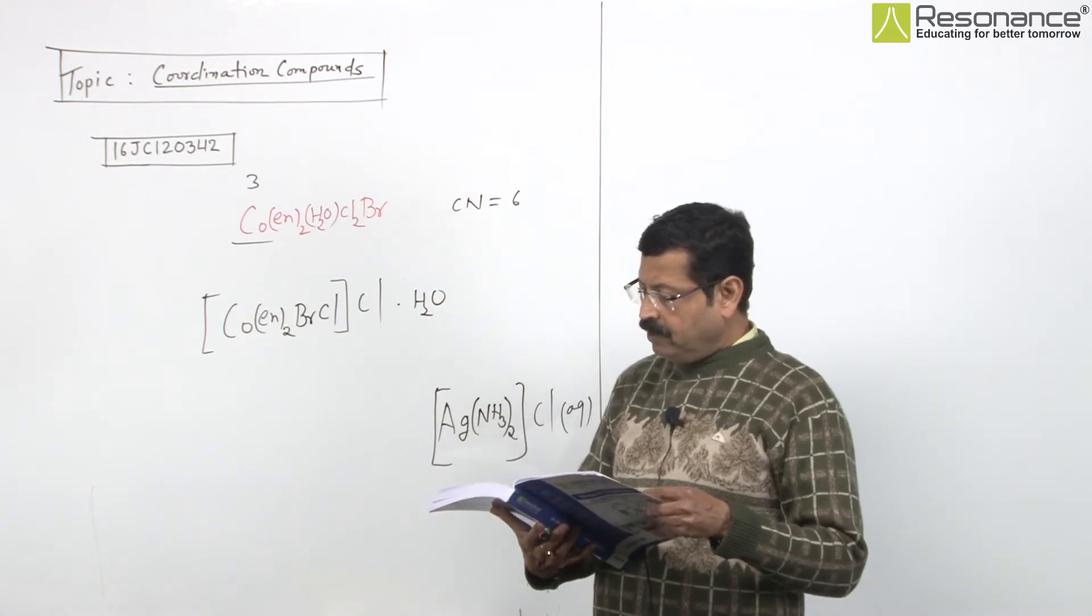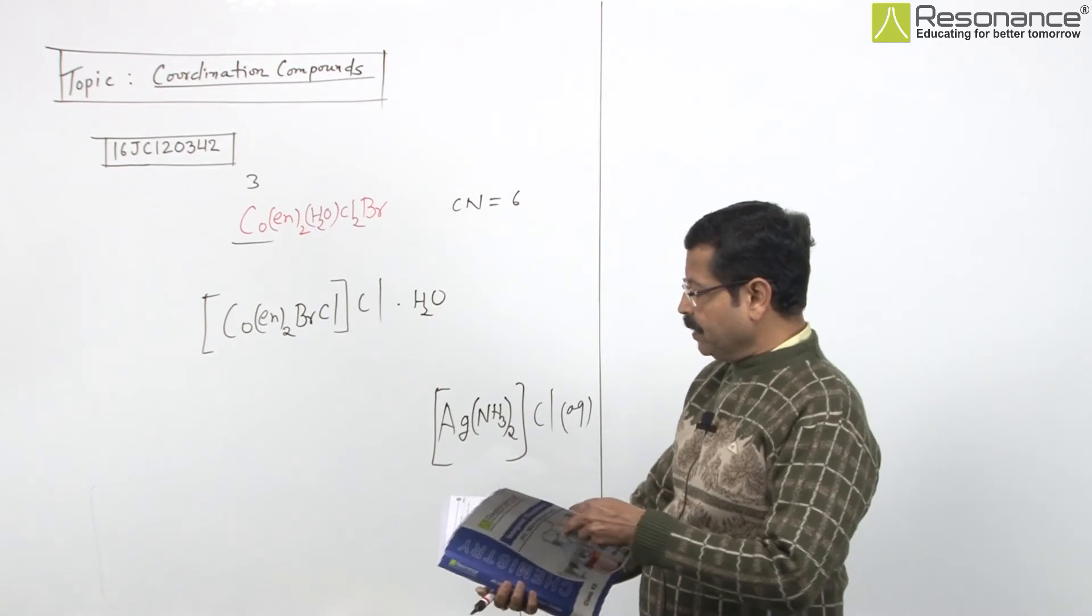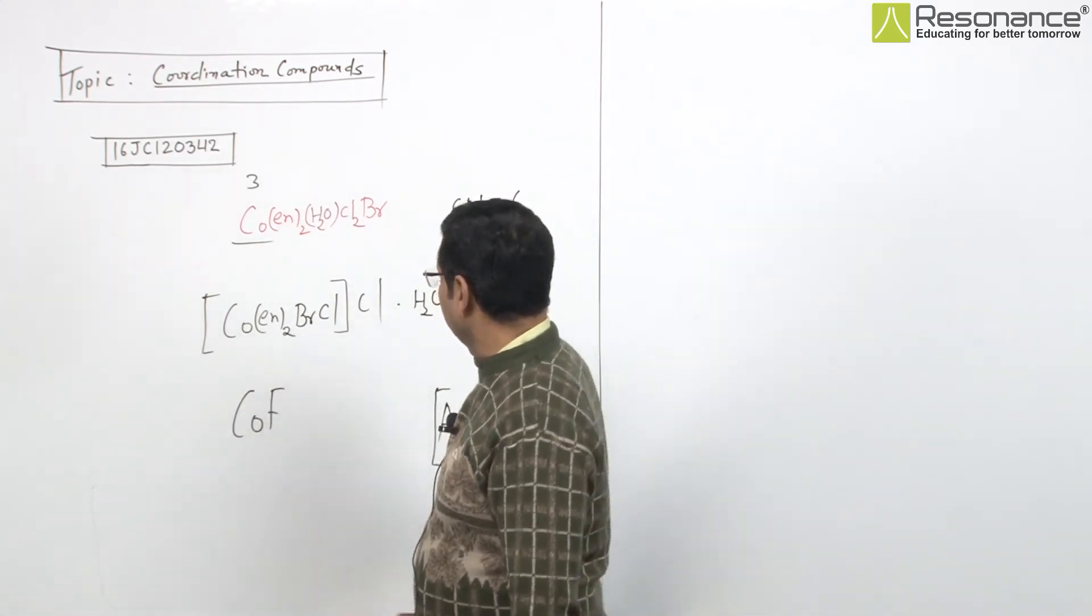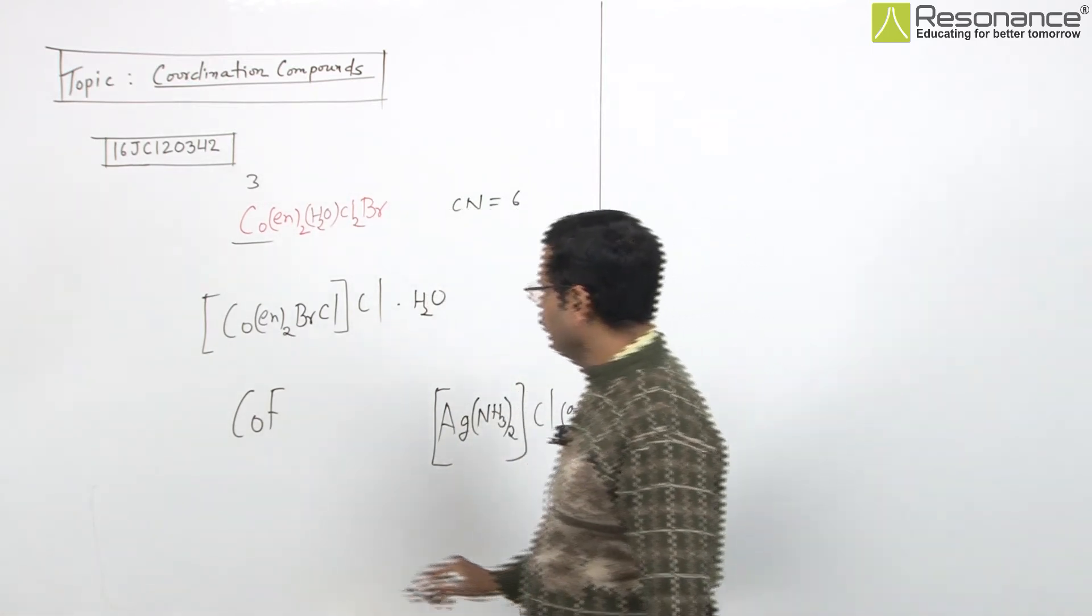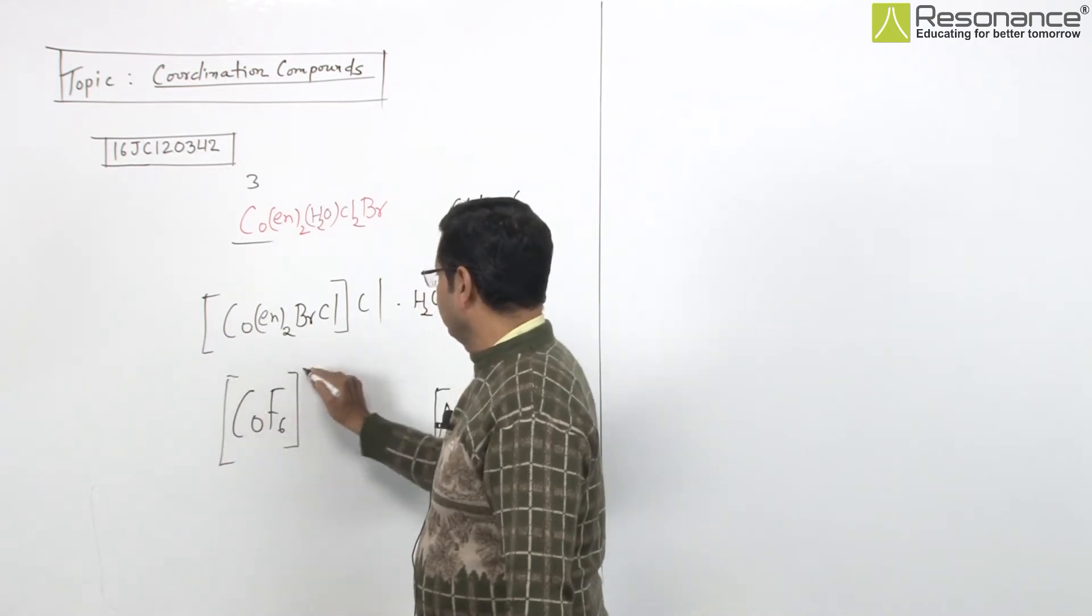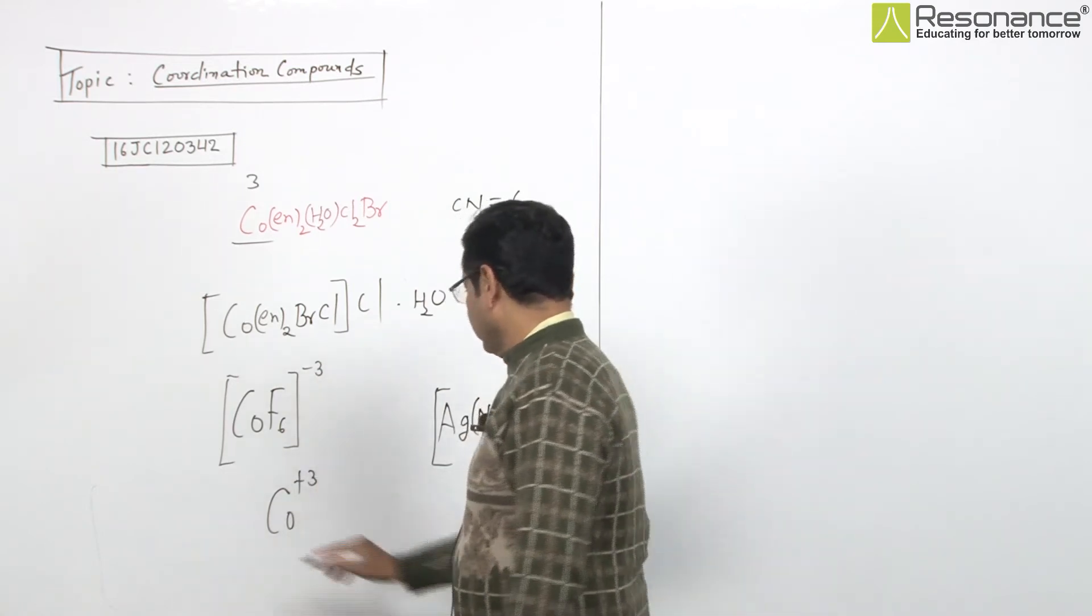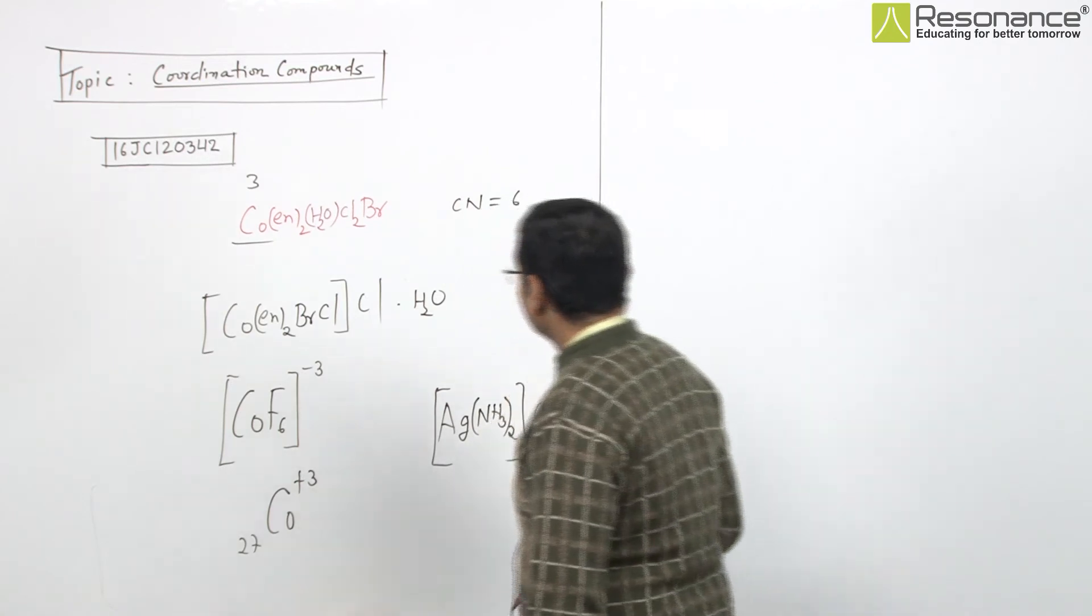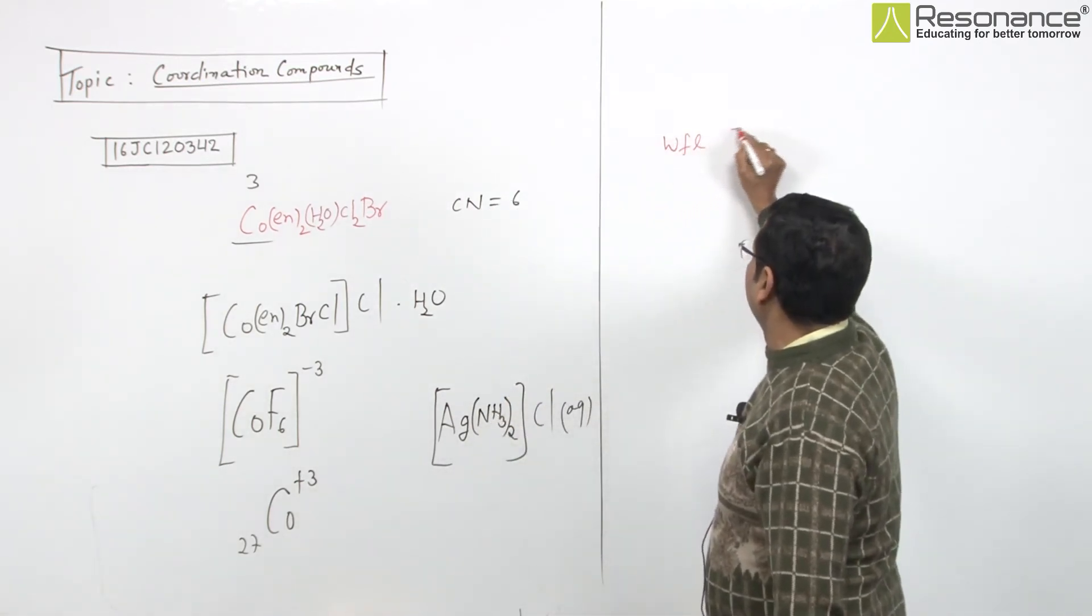If all the ligands in the coordination sphere of the above complex are replaced by F-, what do we get? We're making [CoF6]3-, with cobalt +3, atomic number 27.